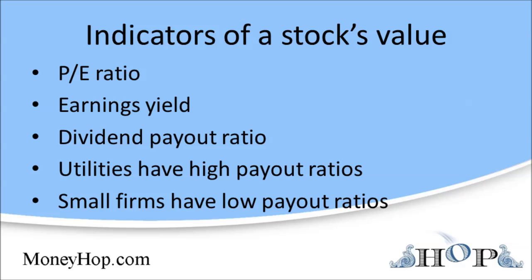So the utility may pay out 70% of its earnings in the form of dividends. This 70% is called the payout ratio. Payout ratios of 70% are common for utilities, while payout ratios for most large blue chip companies are perhaps 30%. On the other hand, small computer companies probably will have a payout ratio of zero in their early years. As the company matures, it may start paying a small dividend, and the payout ratio may rise to 10% after a few years.